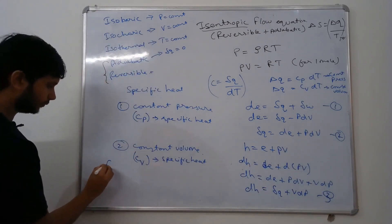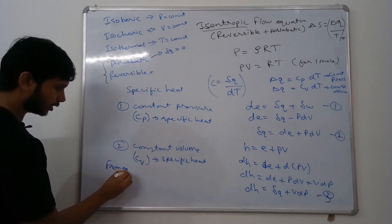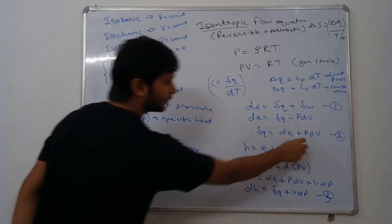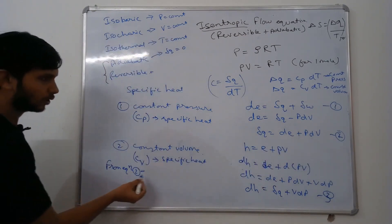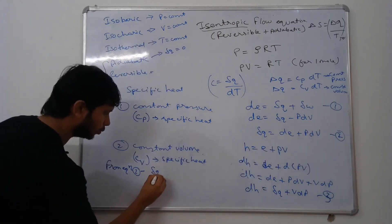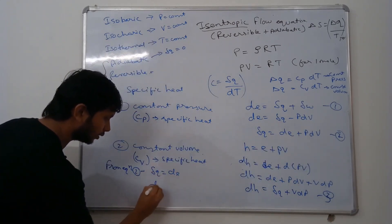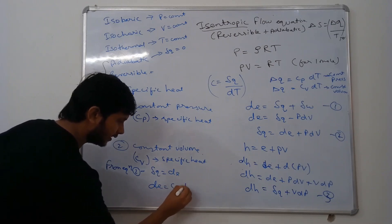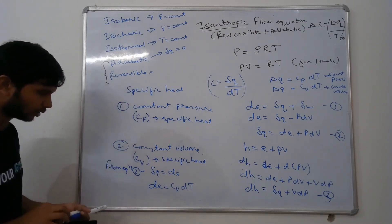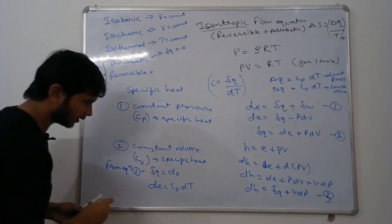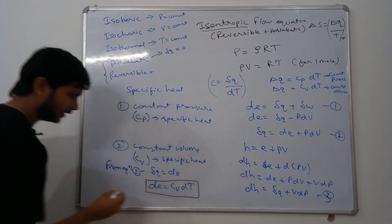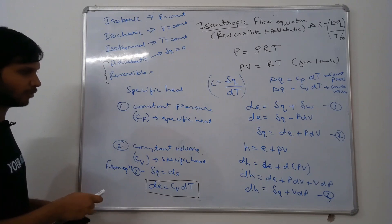From equation 2 at constant volume, dV will be zero, so δQ = dE. This gives us dE = CV·dT. Remember this formula well — change in internal energy equals CV·dT — as we will use it going forward.